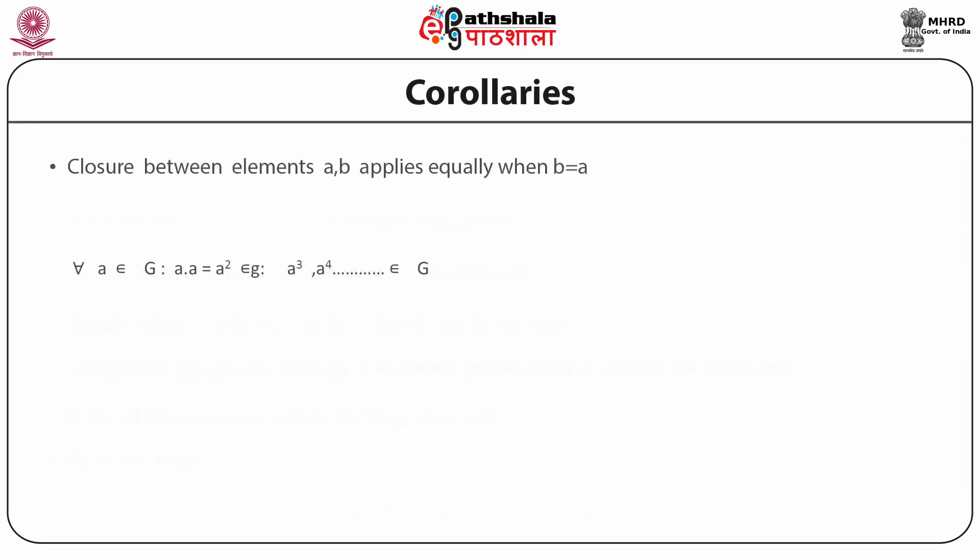The elements of a group can be a discrete set or continuous. For discrete groups, the number of elements can be finite or infinite but always countable. The number of elements in the group is called the order of the group.